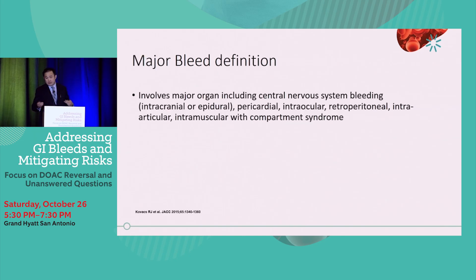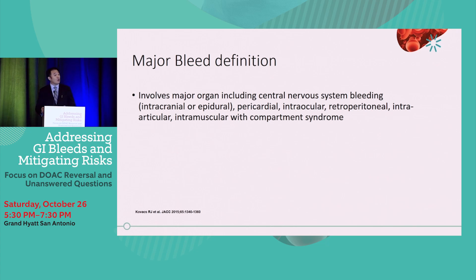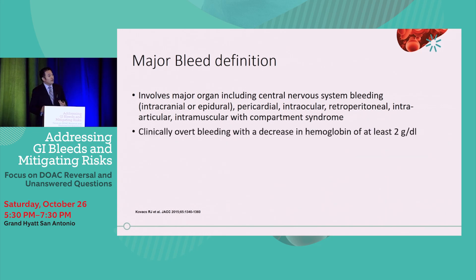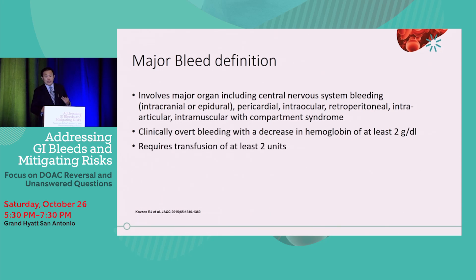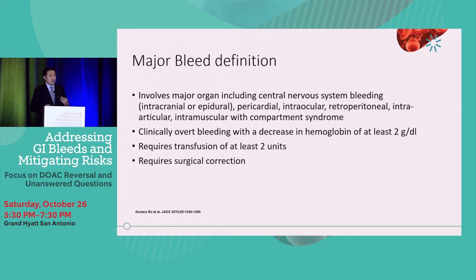Major bleeding definitions: any sort of major organ bleeding, including central nervous system — intracranial or epidural — a pericardial bleed, an intraocular bleed, retroperitoneal, intra-articular or intramuscular bleed with potential compartment syndrome, any clinical overt bleeding with a decrease in hemoglobin of at least two grams, any patient requiring transfusion of at least two units of packed red blood cells, any intervention requiring surgical correction or emergent endoscopy, or any patient requiring vasopressors to maintain blood pressure.